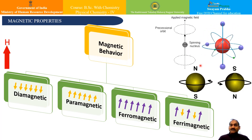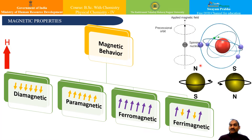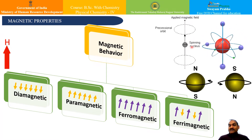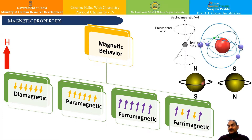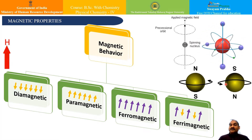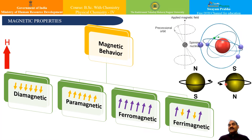The motion around the nucleus is called orbital motion. When the electron rotates around its own axis, it is called spin motion. Due to these two motions, the electrons behave like tiny magnets, and the atoms containing these electrons acquire magnetism due to these kinds of motions.